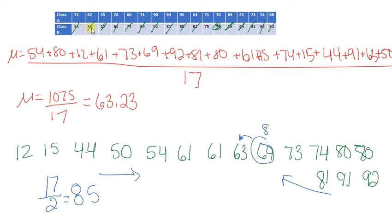Okay, so I have a 54, an 80, a 12, a 61, a 73, a 69, a 92, an 81, an 80, a 61, a 75. Oh, there it is, the 75.